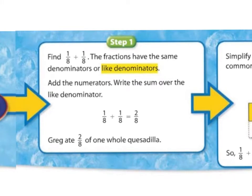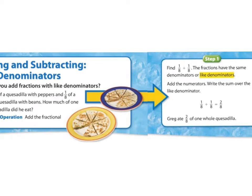So, he ate one-eighth with peppers, one-eighth without. We're going to add them together. The fractions have the same denominators, or we like to call that like denominators. Add the numerators and write the sum over the like denominator. So, we see here, when we add these fractions, we do one plus one equals two, and eight and eight, and we keep that eight. Eight is merely telling us how many pieces the whole is split into.